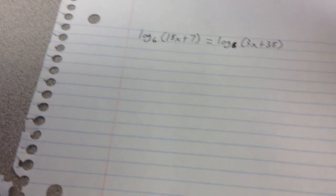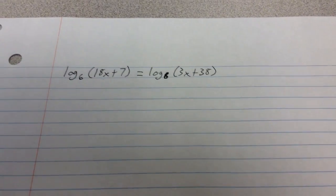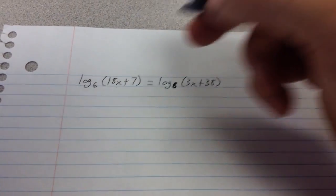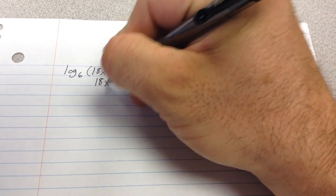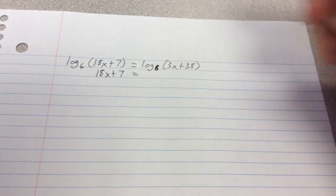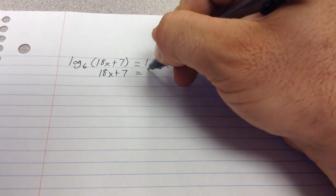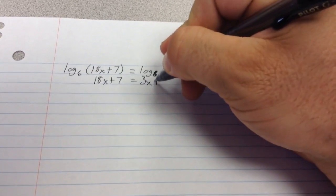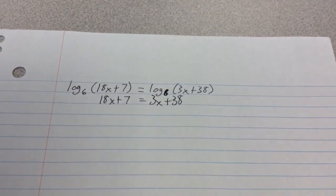So, guess what? With a logarithmic equation with the same base on both sides, basically you just drop the logarithms off both sides, and you end up with, in this case, 18x plus 7 equals 3x plus 38, and you have an equation to solve.